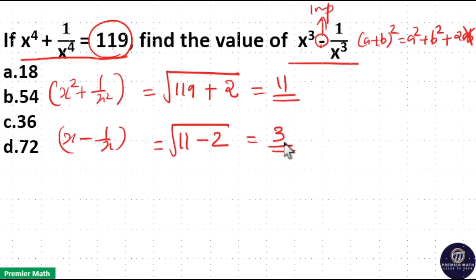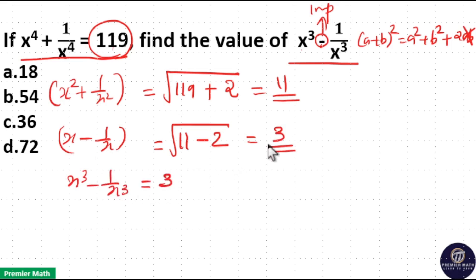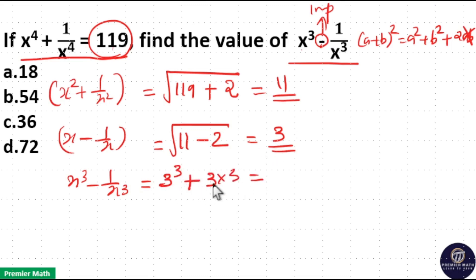If x minus 1 by x is 3, then x cube minus 1 by x cube is equal to 3 cube plus 3 into 3, which is equal to 27 plus 9, which is 36. So, option C is your answer.